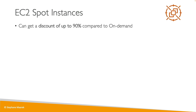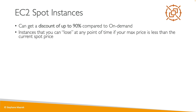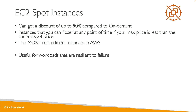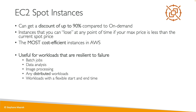Spot instances have the most aggressive discounts — up to 90% compared to on-demand. But you can lose them at any time because you define a max price you're willing to pay, and if the spot price exceeds it, you lose the instance. They're the most cost-efficient instances in AWS and are great for workloads resilient to failure, such as batch jobs, data analysis, image processing, distributed workloads, or workloads with flexible start and end times. They're not suited for critical jobs or databases, and the exam will test you on that.